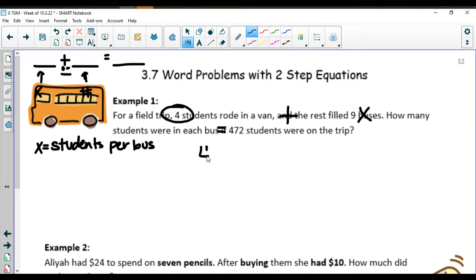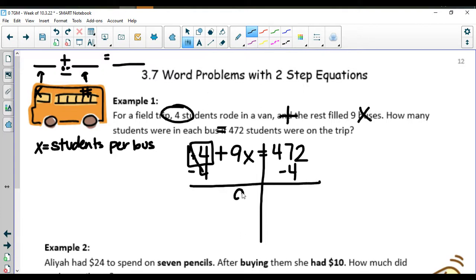Right now we have in our equation 4 plus 9X equals 472. We can solve this two-step equation. We have the 4 here. It is a positive 4 so I'm going to subtract 4 on both sides. That's leaving me 9X. It's positive. I don't need to write that.